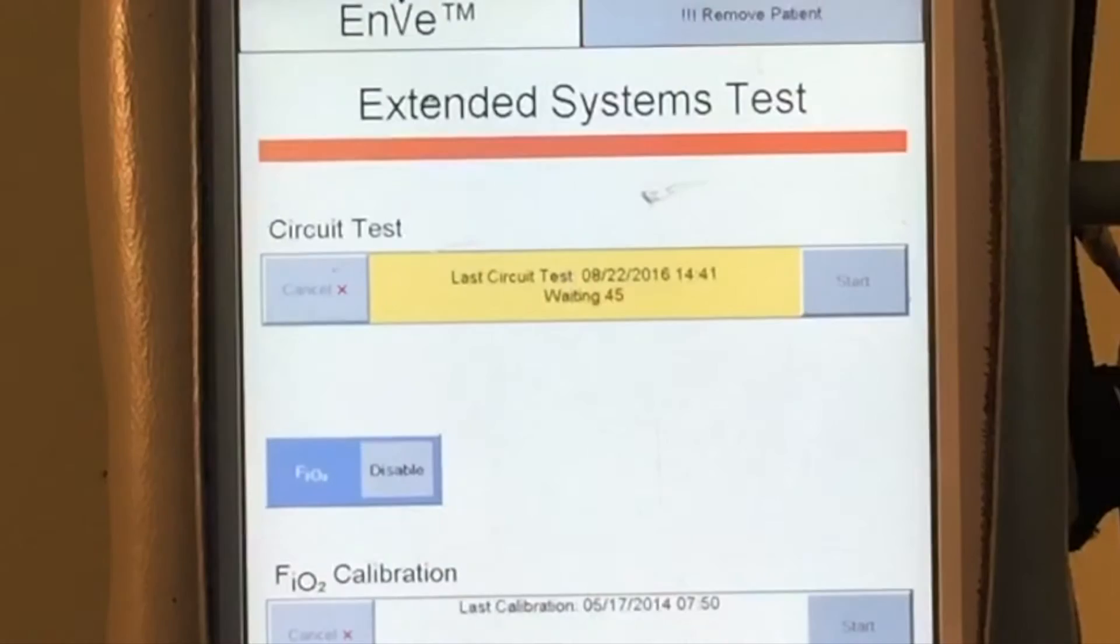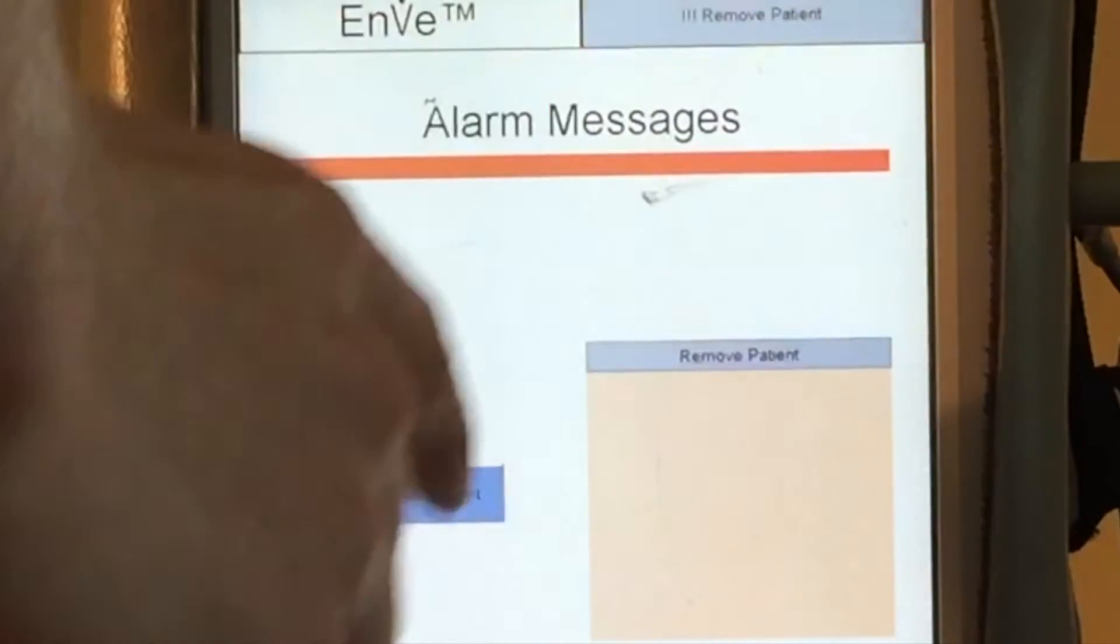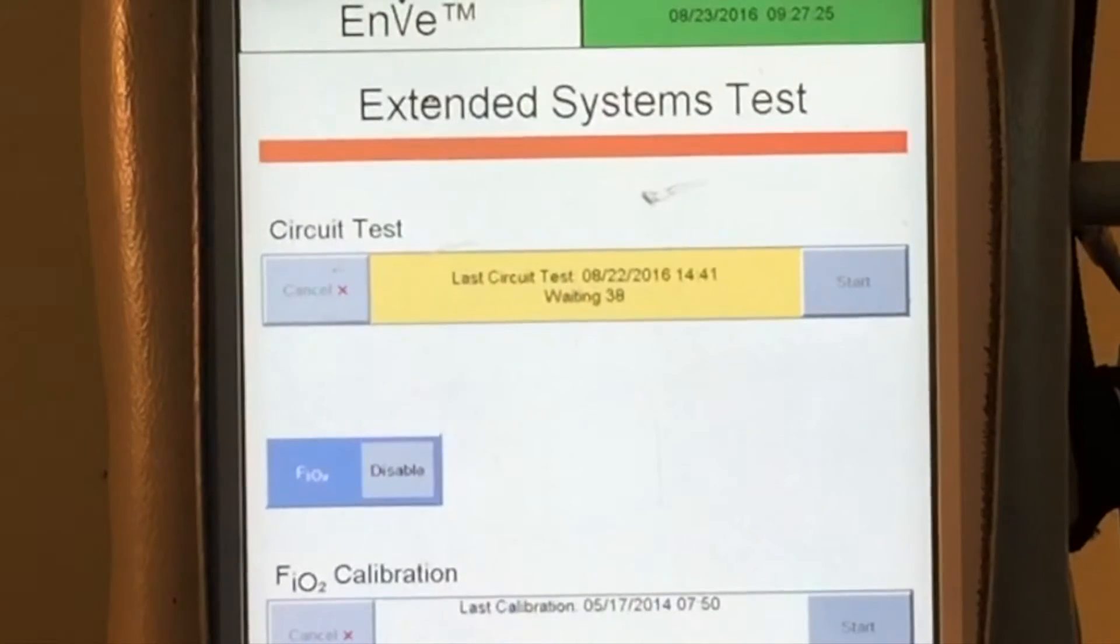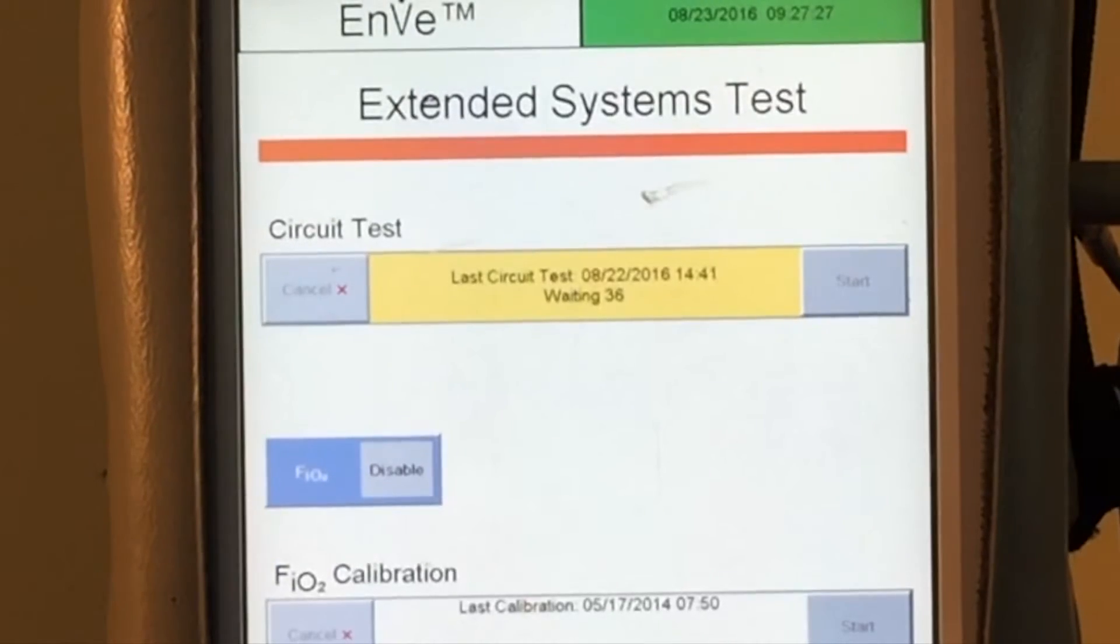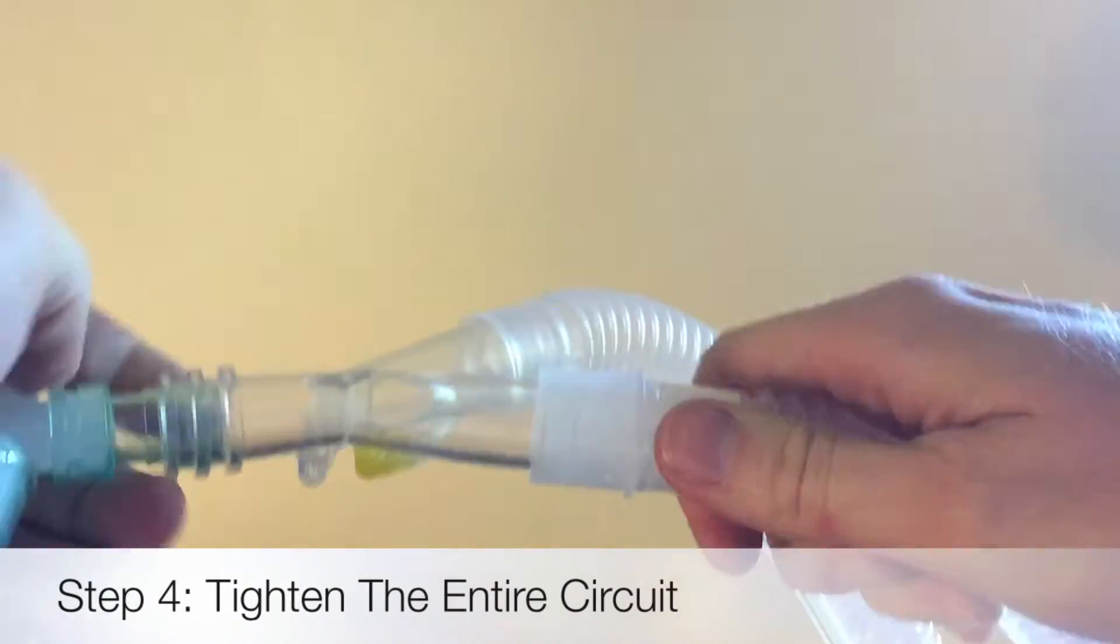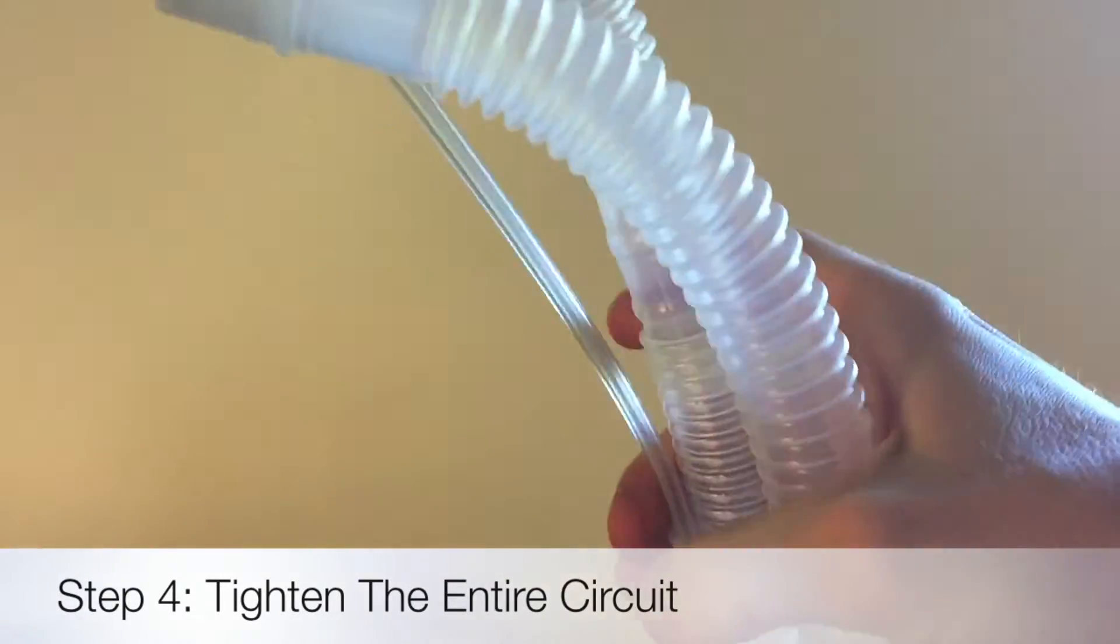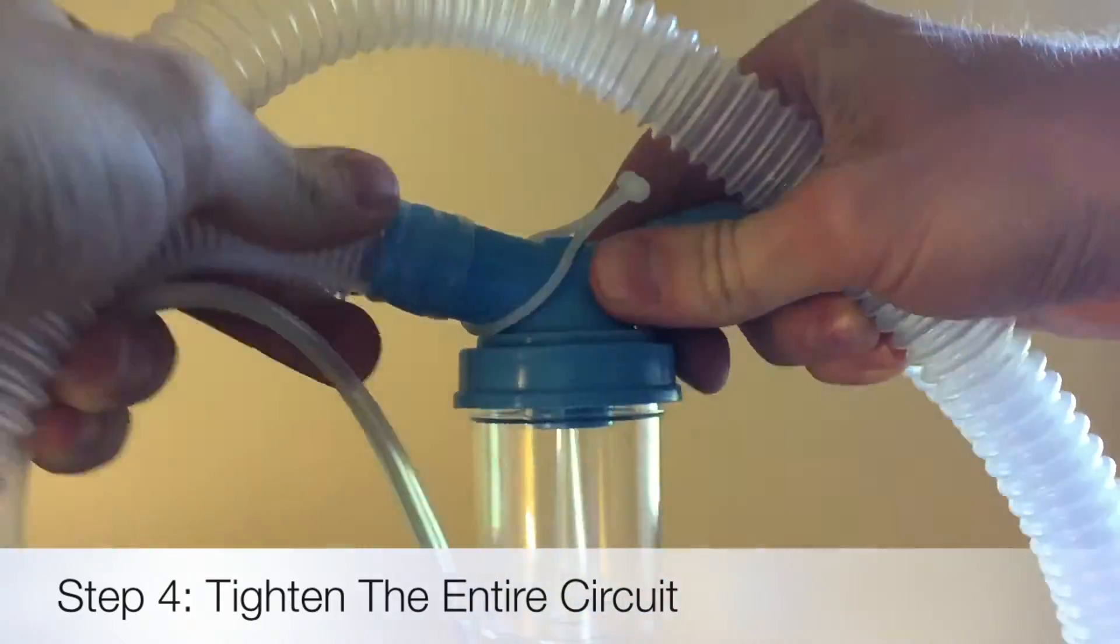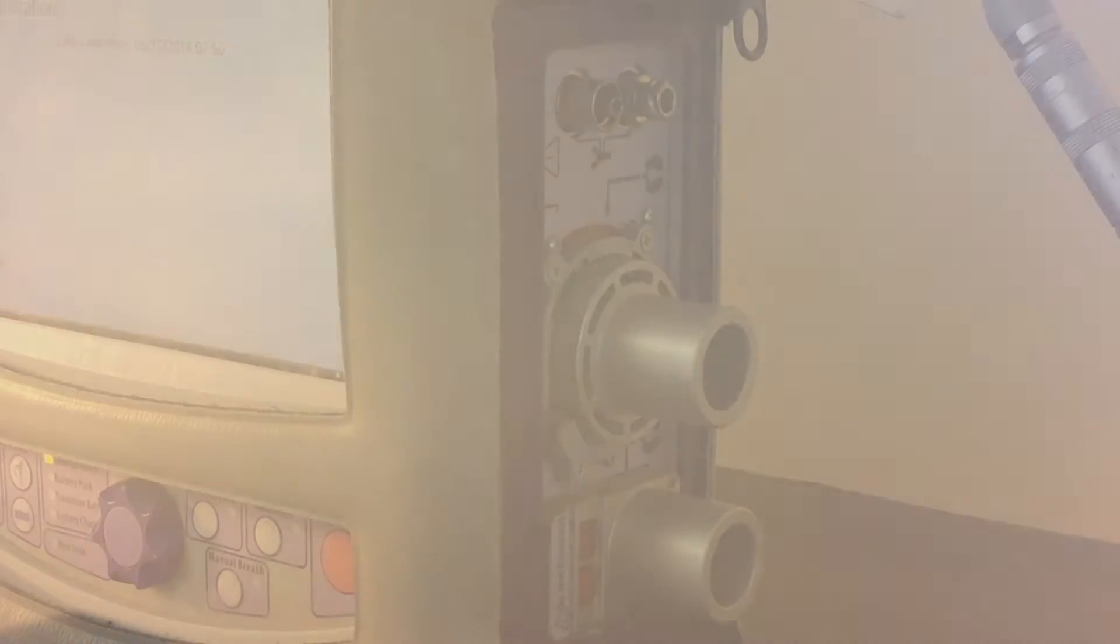Now you'll notice way up at the top it says waiting 44, 43, 42 and that's the vent performing self-tests. So it's not ready to perform a test yet. So what you're going to go ahead and do is grab your circuit and then we're going to tighten it. Start at the top, tighten it here at the Y and then go and follow down. You'll see a water trap right here and this is another spot where it can leak. So go ahead and tighten that.